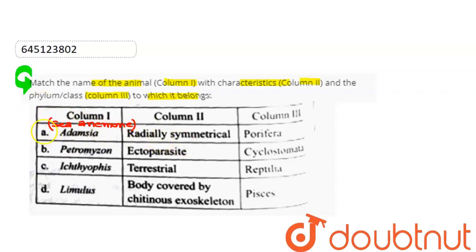So, this option is wrong. Because, if we talk about Adamsia, this is biradial symmetry. Right? And this is Cnideria, which belongs to Cnideria.